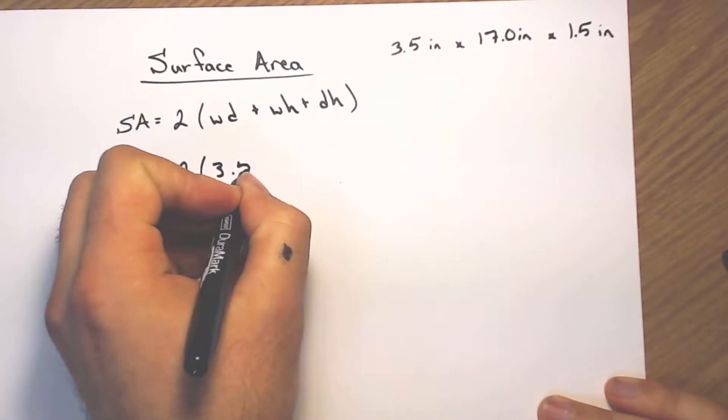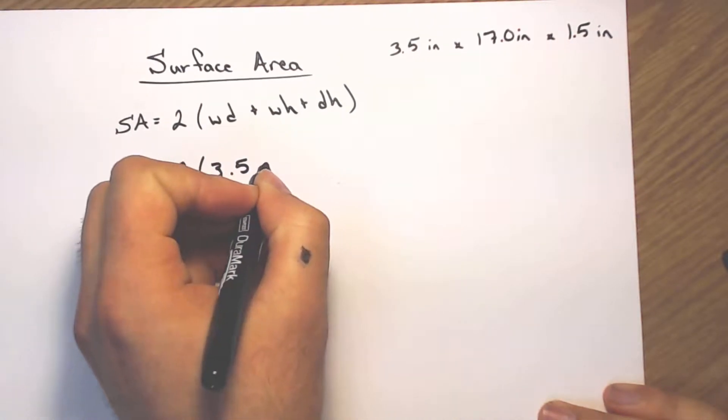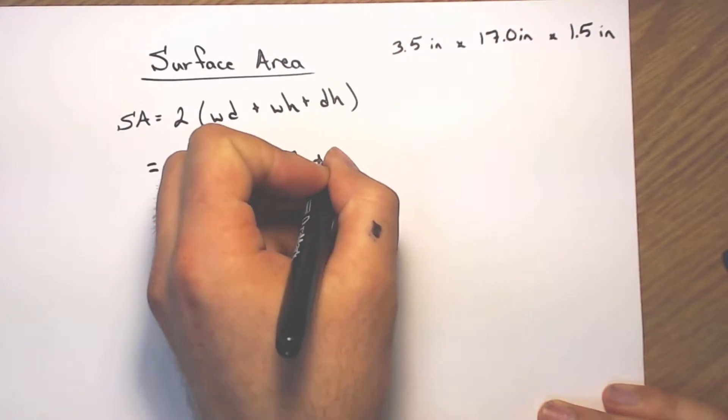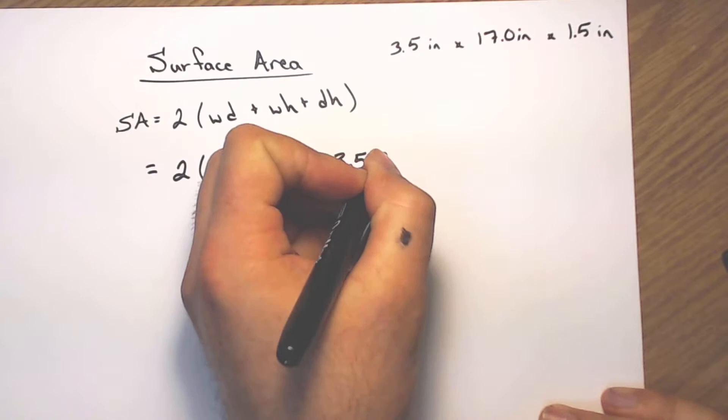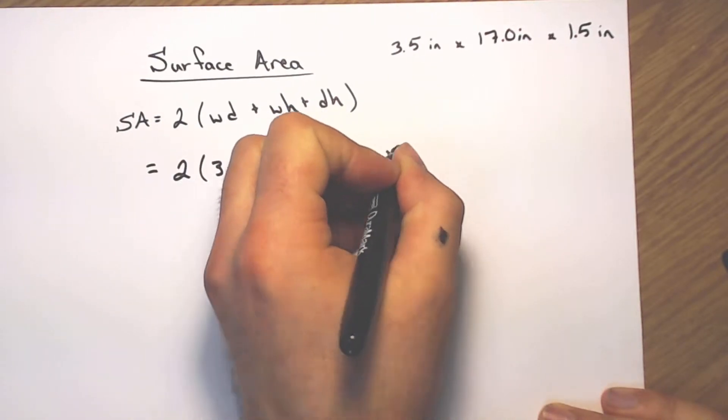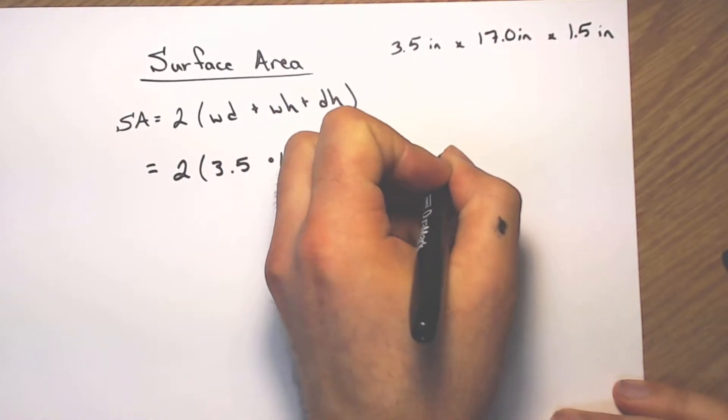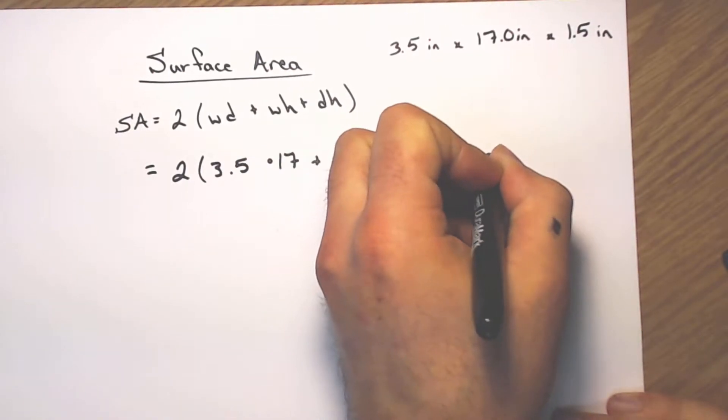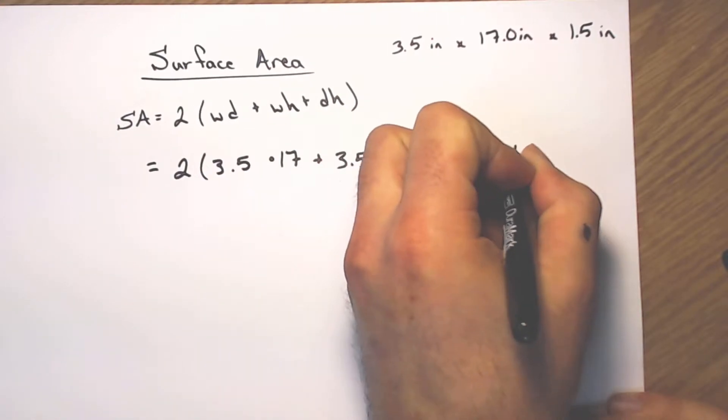My width being 3.5, my depth being 17, plus my width being 3.5 times my height of 1.5, plus my depth of 17 times my height of 1.5.